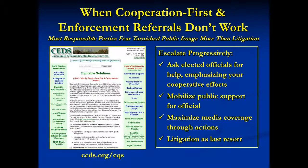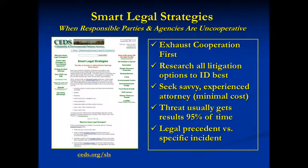So what happens when a responsible party doesn't cooperate or an enforcement agency fails to act? First of all, these will be rare instances. Your first step should be to contact the official who represents you on the legislative body that oversees the enforcement agency — a city council, county commissioners, aldermen, etc. If you can show you tried to work cooperatively and got nowhere, then it's likely the official will make some calls. Most of the time, an issue will be resolved by the time you reach the threat of litigation.